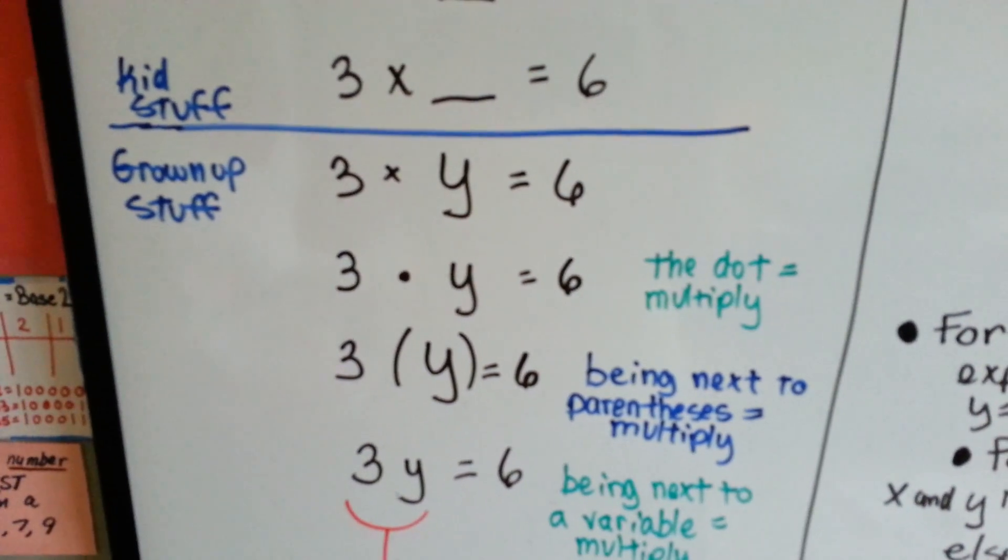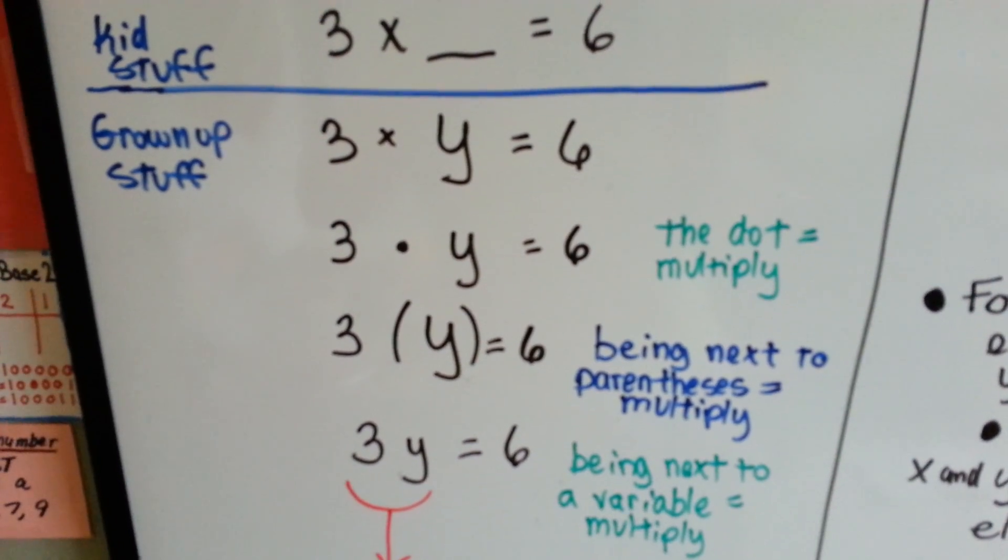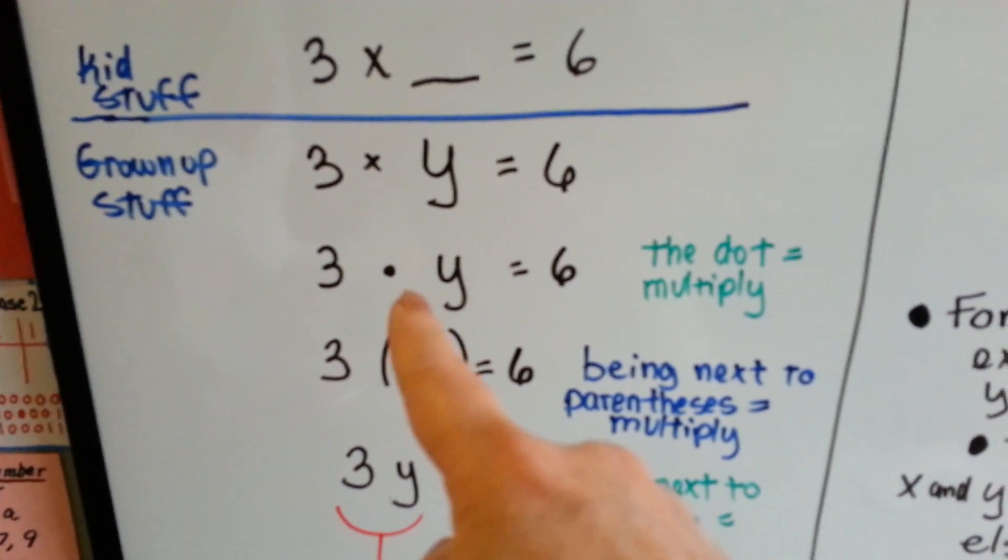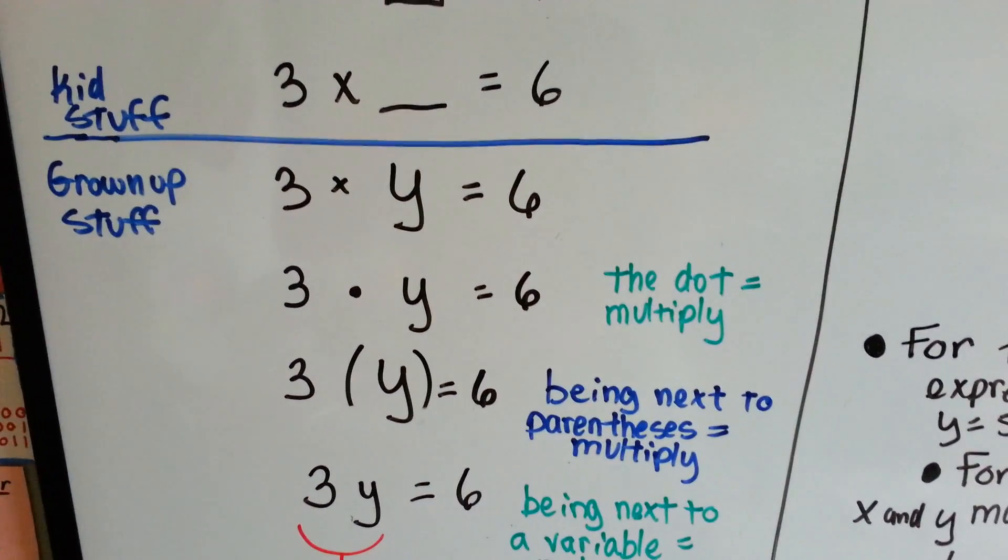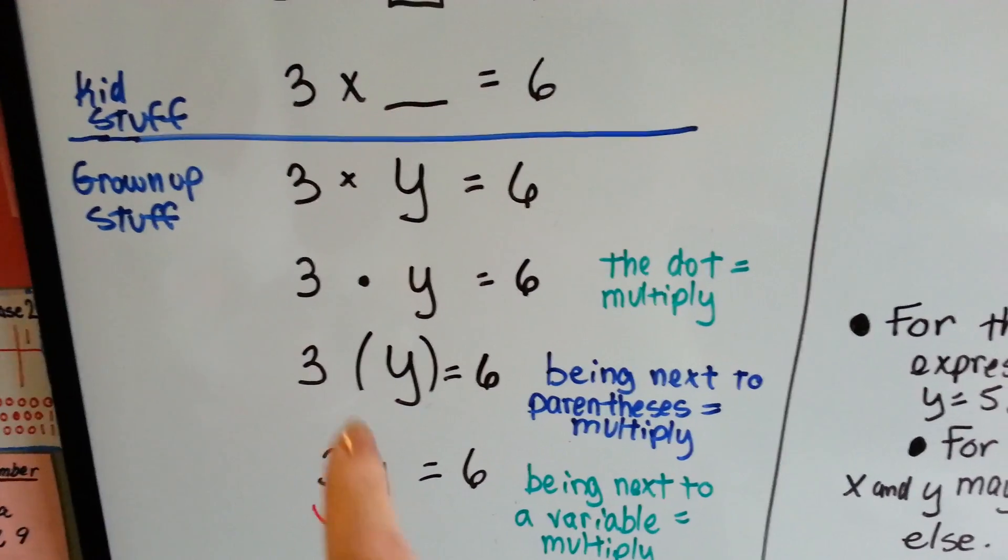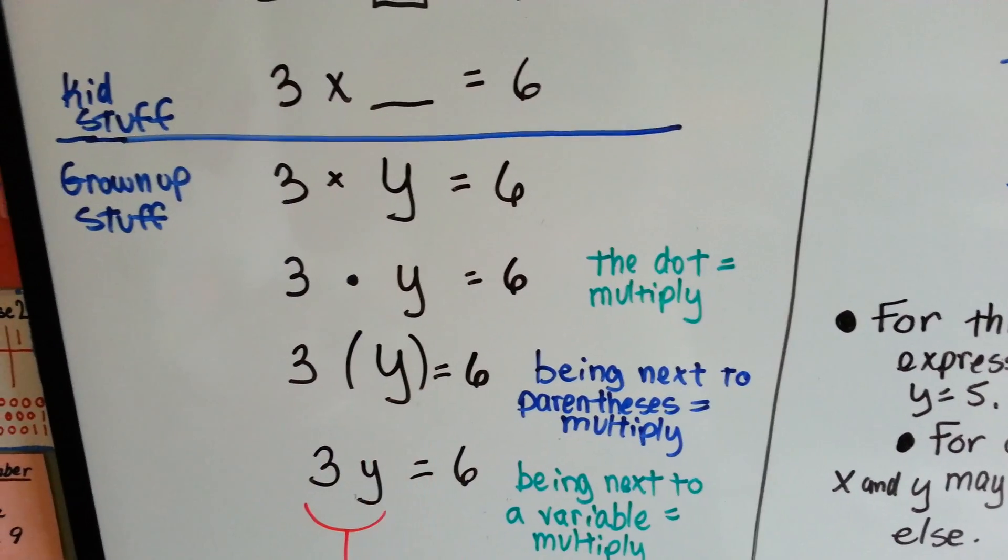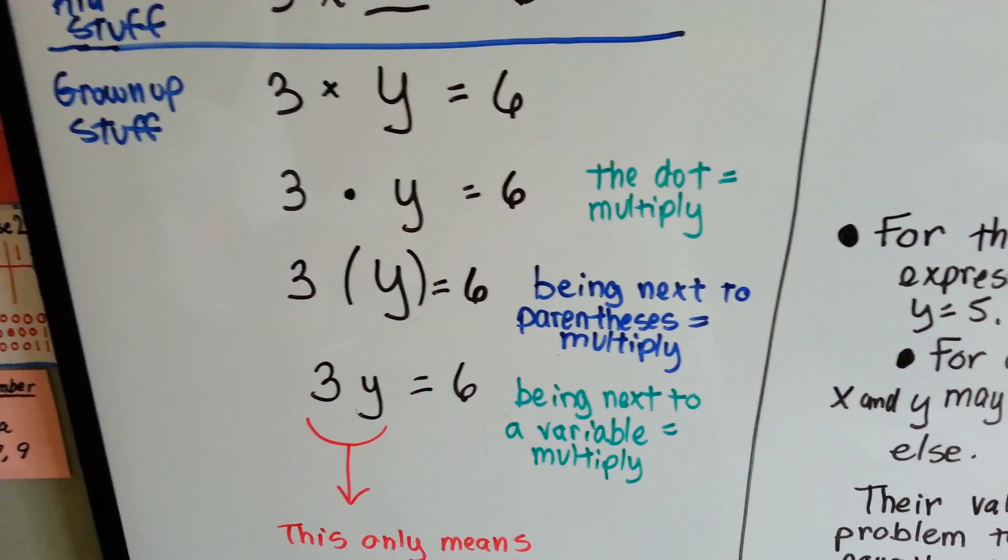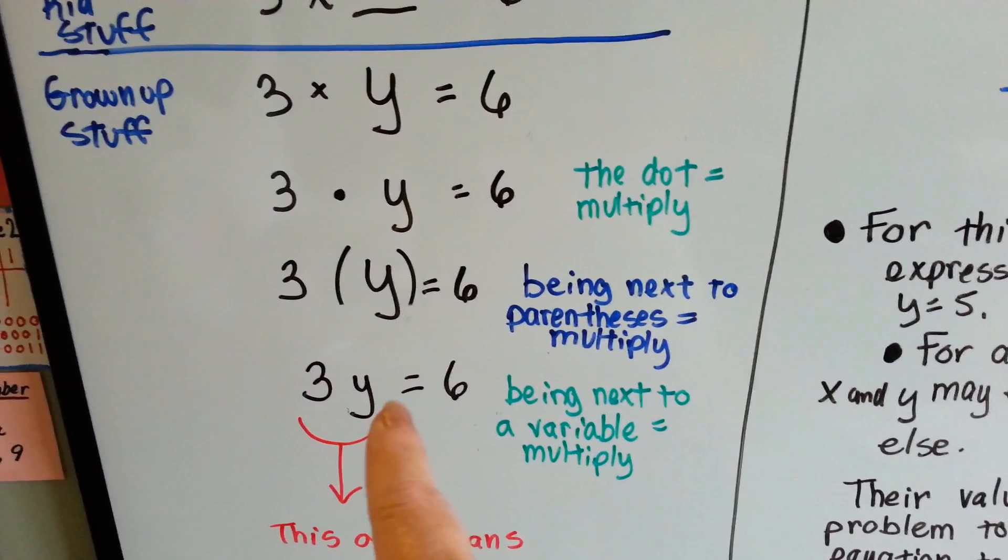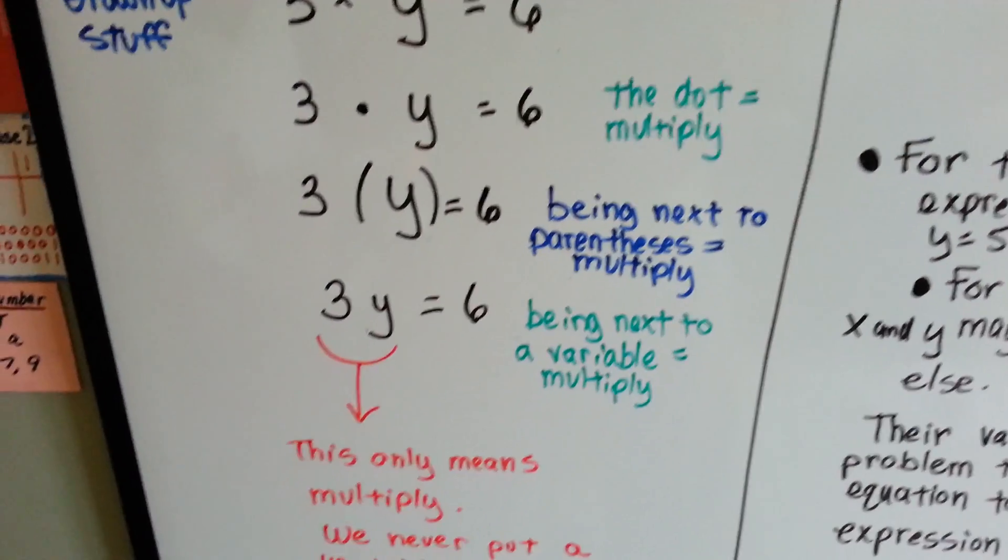Well, the grown-up stuff is 3 times y equals 6, or 3 with a dot y equals 6, because that dot stands for a multiplication sign. Being next to parentheses, 3 with a parentheses and a y means 3 times y. And just being next to each other means multiply. 3y equals 6 means 3 times y, or 3 times blank.